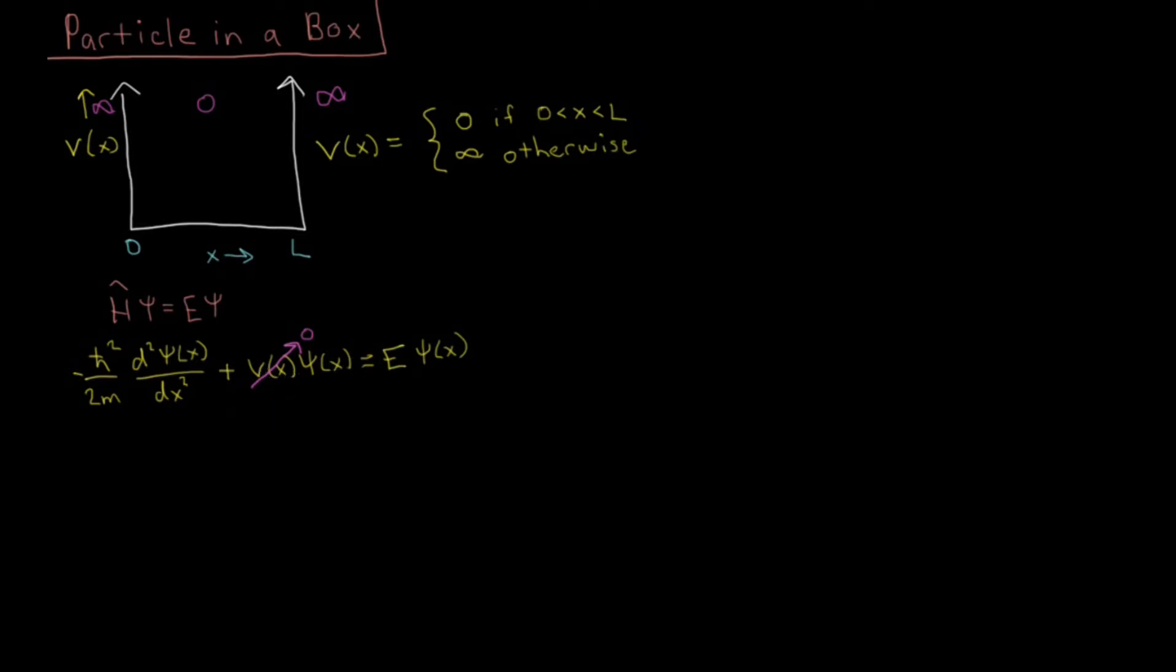And then, you should be able to convince yourself that if I do a little bit of algebraic manipulation and rearrange this equation, I can get the second derivative of the wave function with respect to X equals minus 2 times mass times E energy over h-bar squared times psi of X.